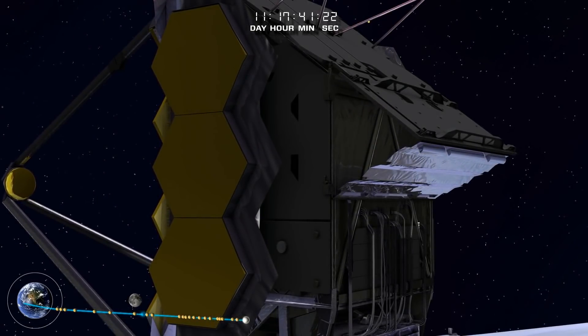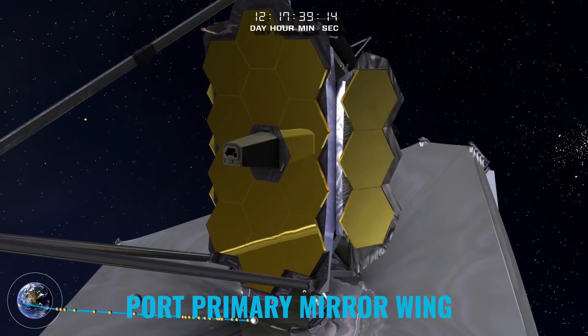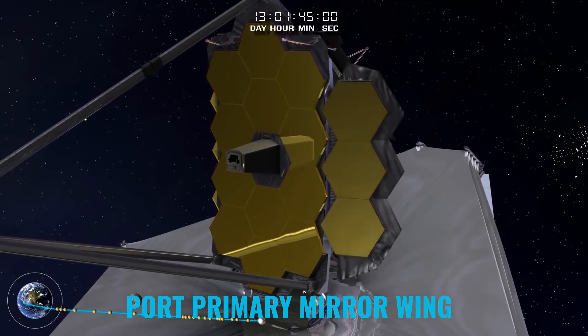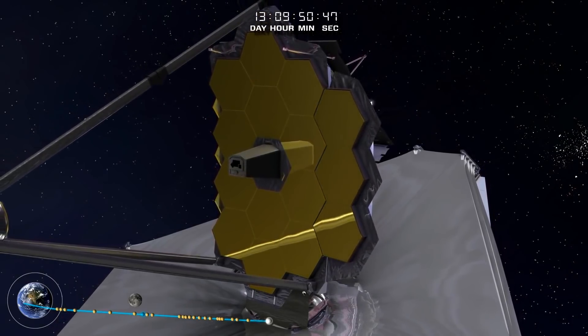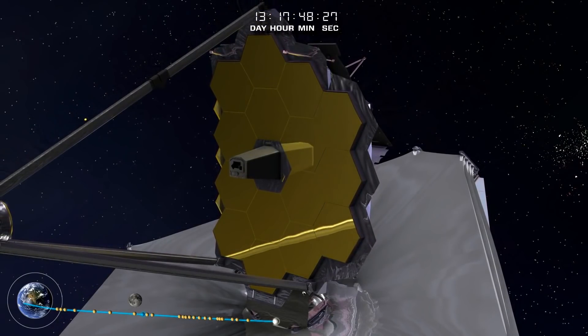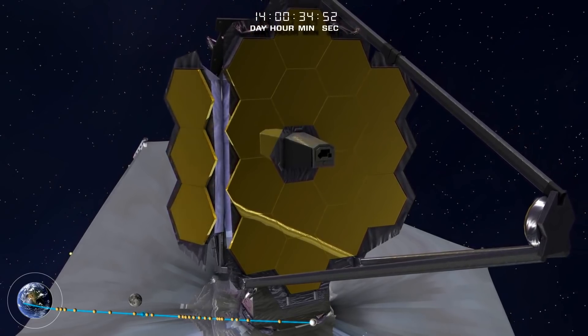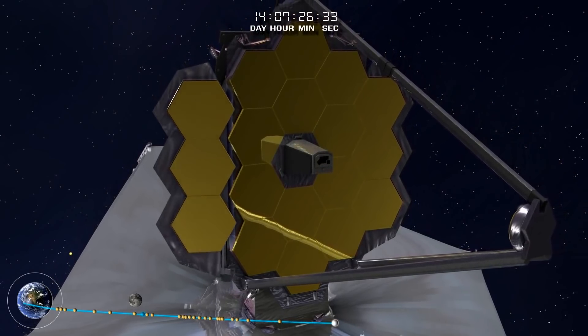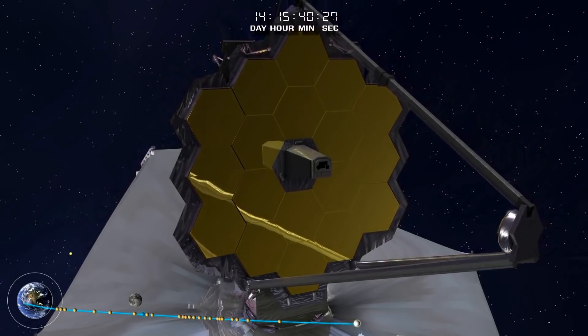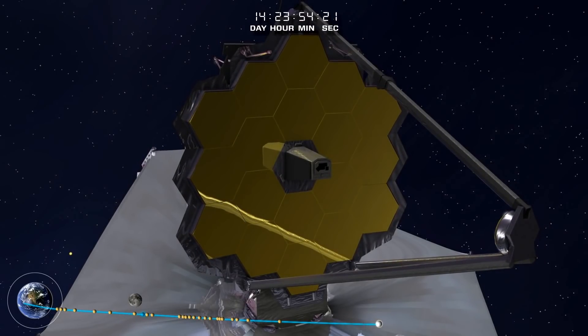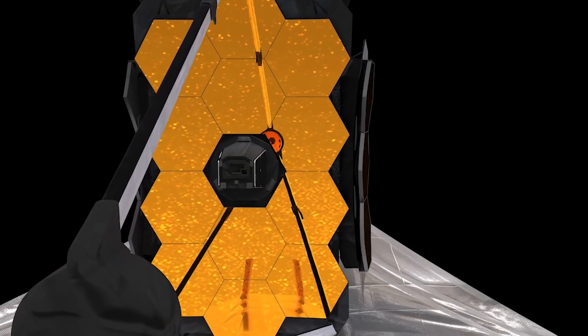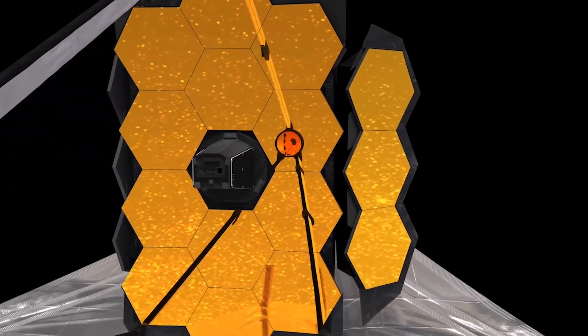Port primary mirror wing begins. The deployment team begins planning and operations for the deployment of the left port plus V2 primary mirror wing from its stowed launch position into its operational position. This operation deploys and latches the plus V2 wing of the primary mirror. Each wing holds three of the 18 mirror segments. This is a motor-driven deployment.